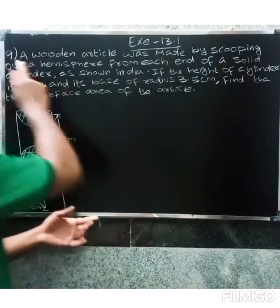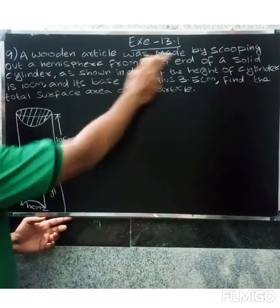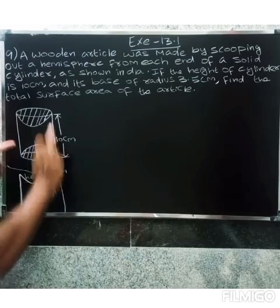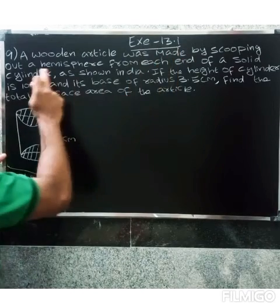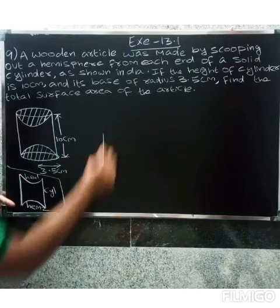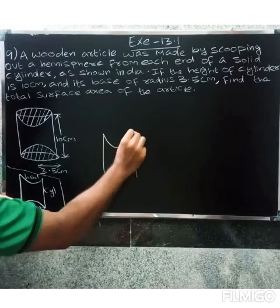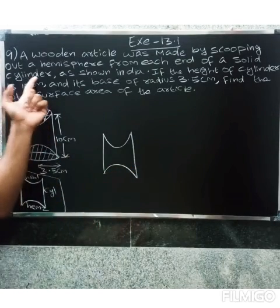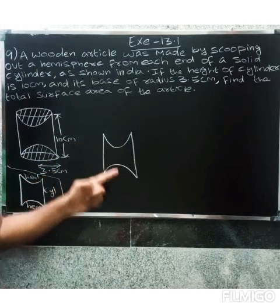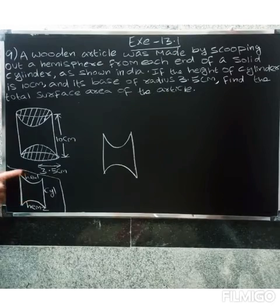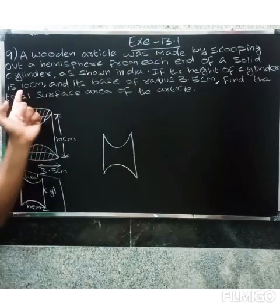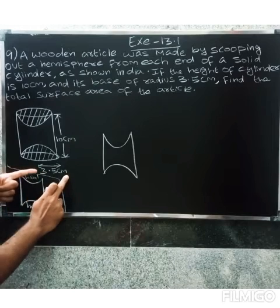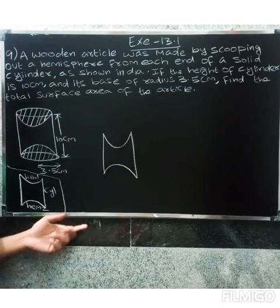Welcome friends. In this 9th question, a wooden article was made by scooping out a hemisphere from each end of a solid cylinder. The article is cylinder-shaped with hemispheres scooped out from each end - like an ice cream scoop shape. The height of the cylinder is 10 centimeters and its base radius is 3.5 centimeters. Find the total surface area of the article.